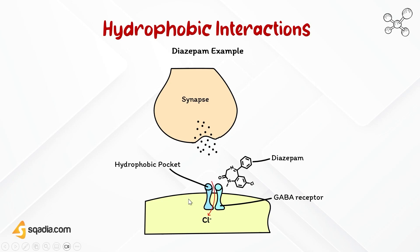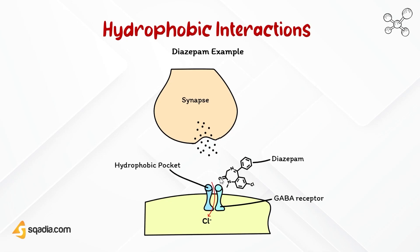Hydrophobic interactions also contribute to the selectivity of diazepam for the GABA receptor. Other drugs cannot bind to the GABA receptor because they lack the appropriate hydrophobic region; diazepam binds selectively because its hydrophobic region complements the hydrophobic pocket on the receptor, making it highly selective for the specific amino acid arrangement in that region.